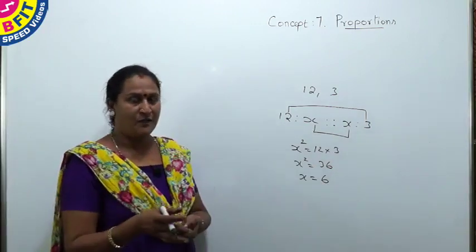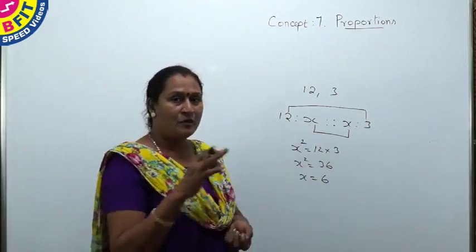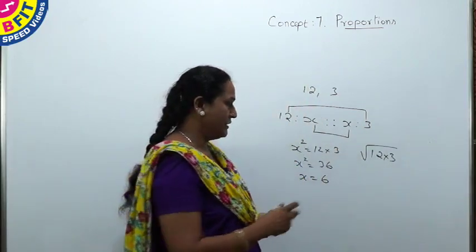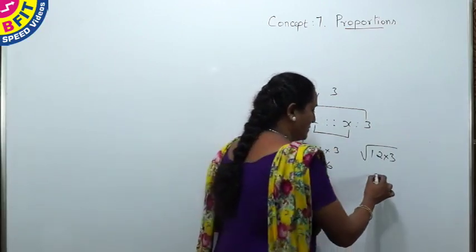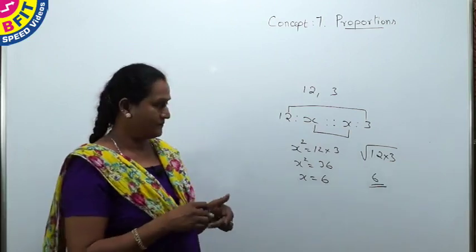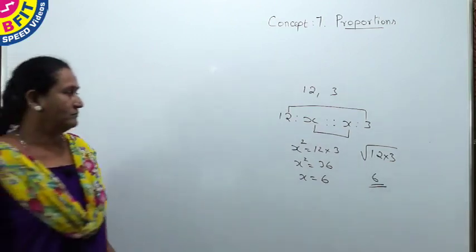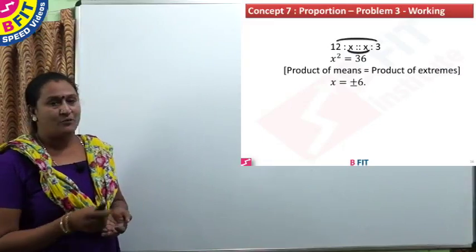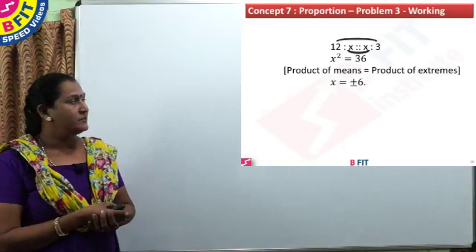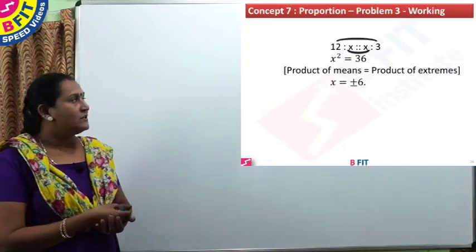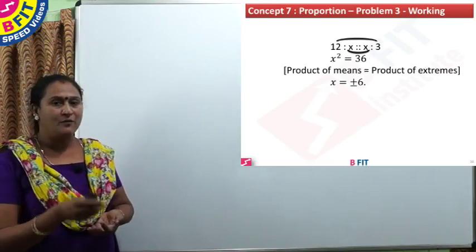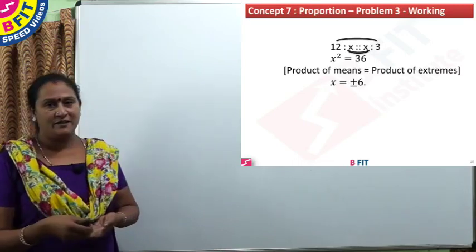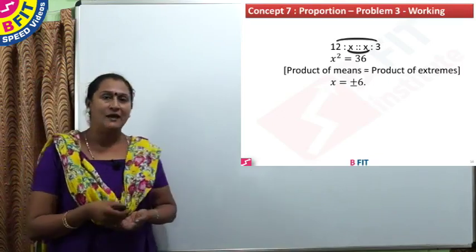When the mean proportion of two numbers is asked, you can also directly multiply the two numbers and take the square root. Product of 12 and 3 is 36, and square root of 36 is 6, which is the mean proportion. So writing 12:x::x:3, where x² = 36, gives x = 6. The mean proportion of 12 and 3 is 6.